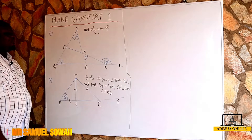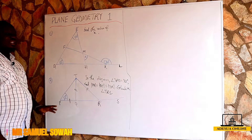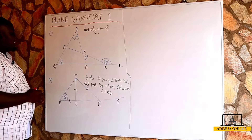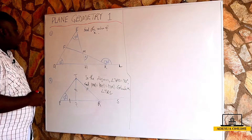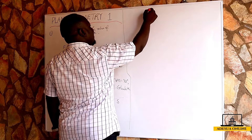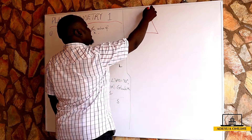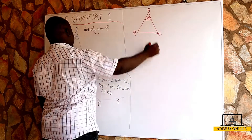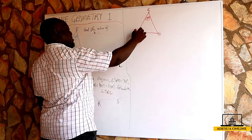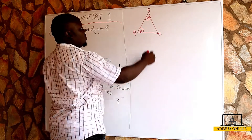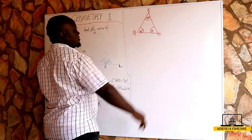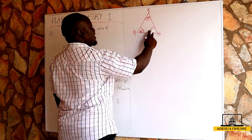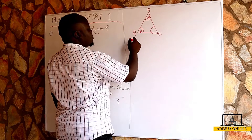From our previous lessons we learned that the interior angles of a triangle add up to 180. If we consider triangle EQH, we realize that the angle at E is 40 degrees, the angle at Q is 85 degrees, and the angle at H we don't know — let's name it Y.